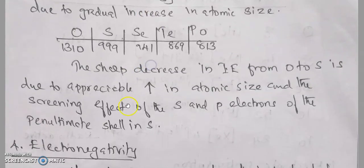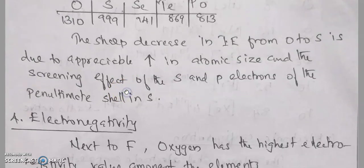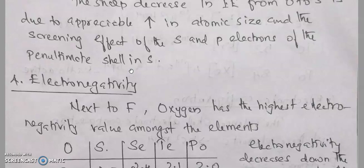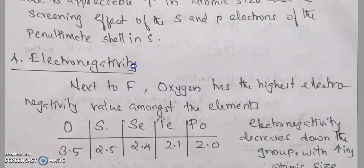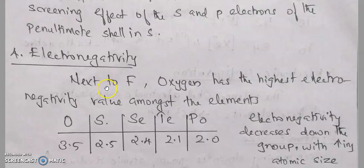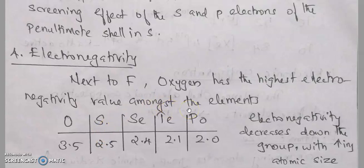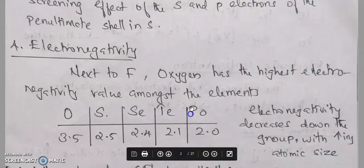Oxygen has the highest electronegativity value among Group 16 elements, with a value of 3.5. Sulfur is 2.5, selenium 2.4, tellurium 2.1, and polonium 2.0. Electronegativity decreases down the group with increasing atomic size.